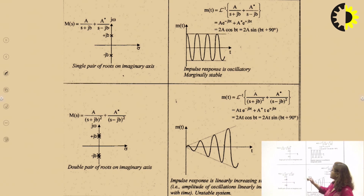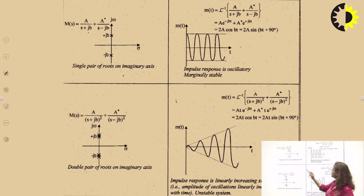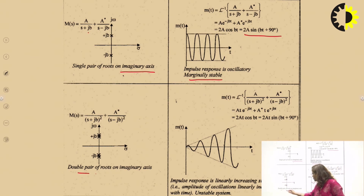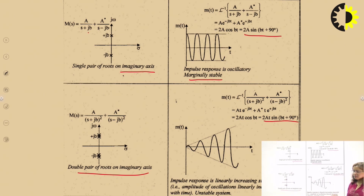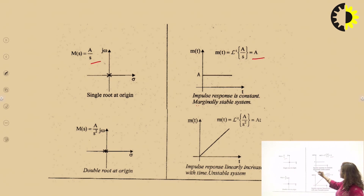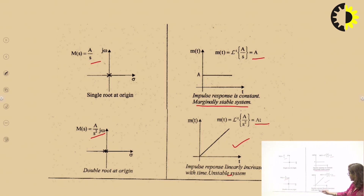Consider one more system with roots at ±jβ — that is a single pair of roots on the j-omega axis. The response will be sustained and the system is marginally stable. And if there are a double pair of roots on the imaginary axis, then the response is t·sin(θ), which is a growing response, and the system will be unstable. If there is a single pole at the origin the response will be constant — marginally stable — and if there are multiple roots at the origin the response will be a straight line, which is unstable.